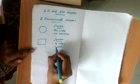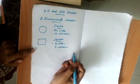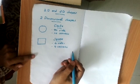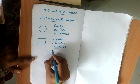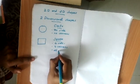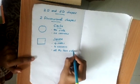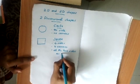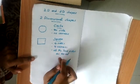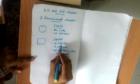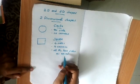These are the four corners of a square, and all four sides are equal. So the properties of a square are: four sides, four corners, and all four sides are equal.